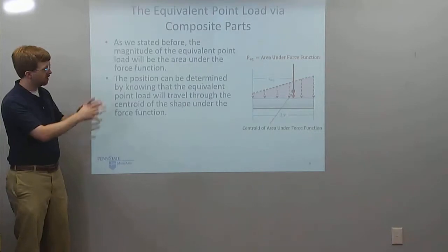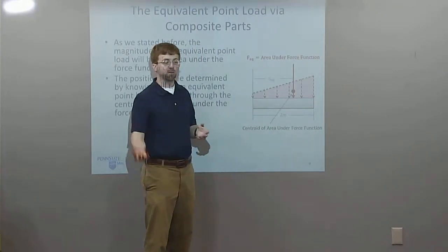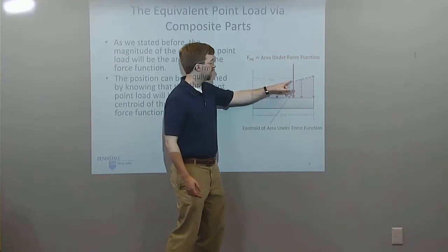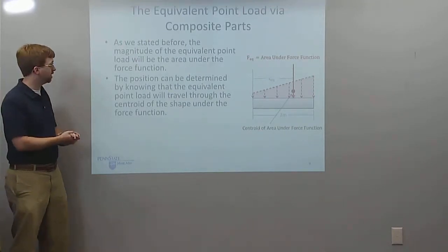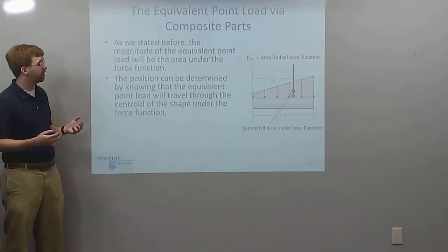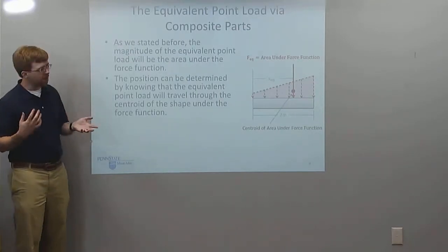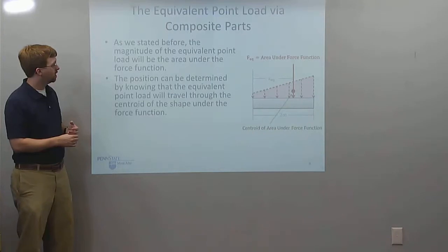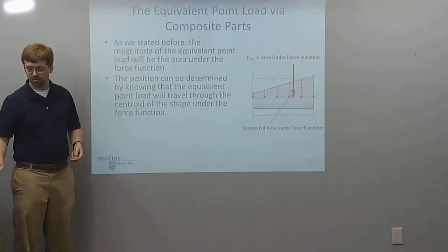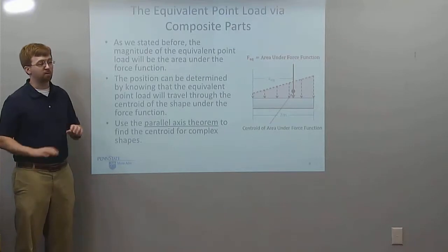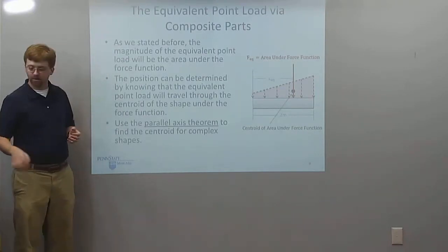The position can be determined by knowing that the equivalent point load will always travel through the centroid of the shape. There's a whole other video lecture on finding centroids, but if I can find the centroid, it will tell me the X_EQ value. This method is usually simpler for basic shapes like a trapezoid, but for shapes like parabolas it gets more complicated. For more complex shapes, you can use something called the parallel axis theorem to find the centroid.